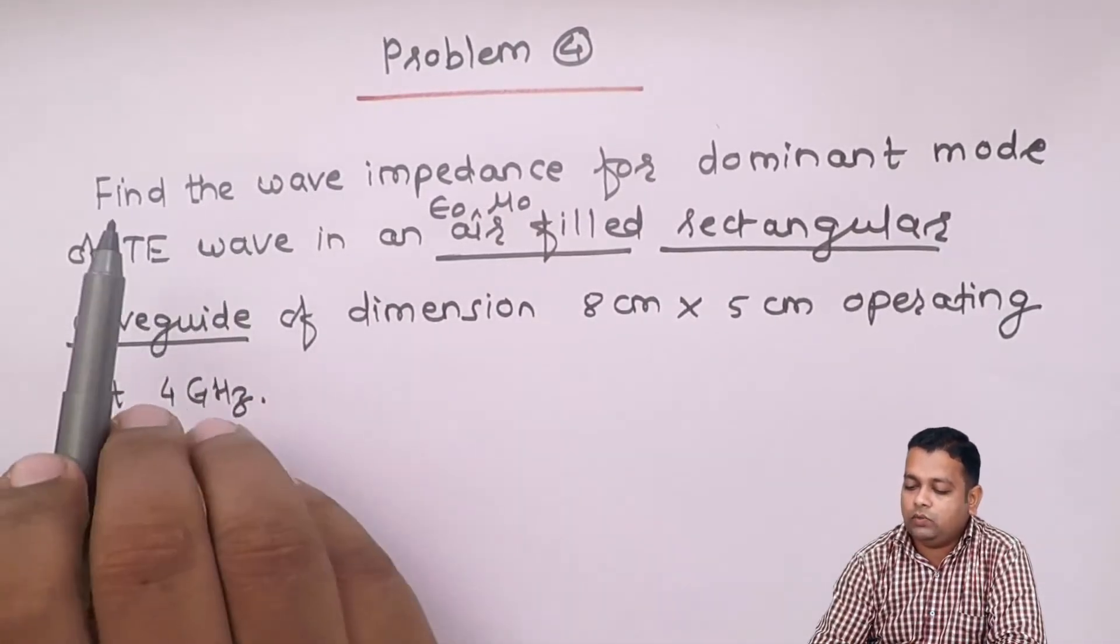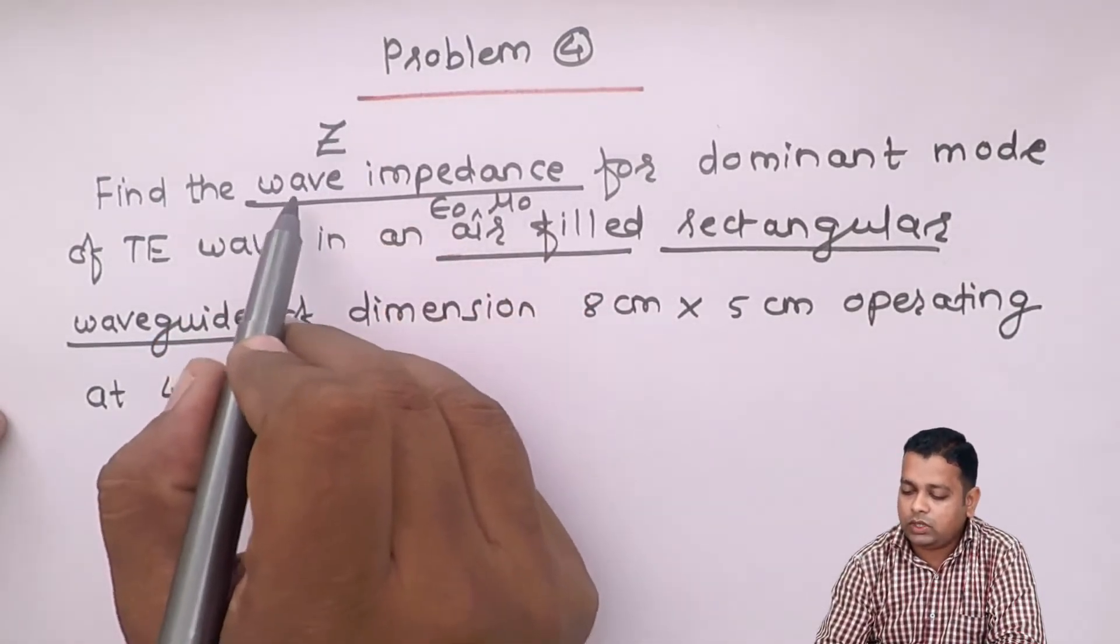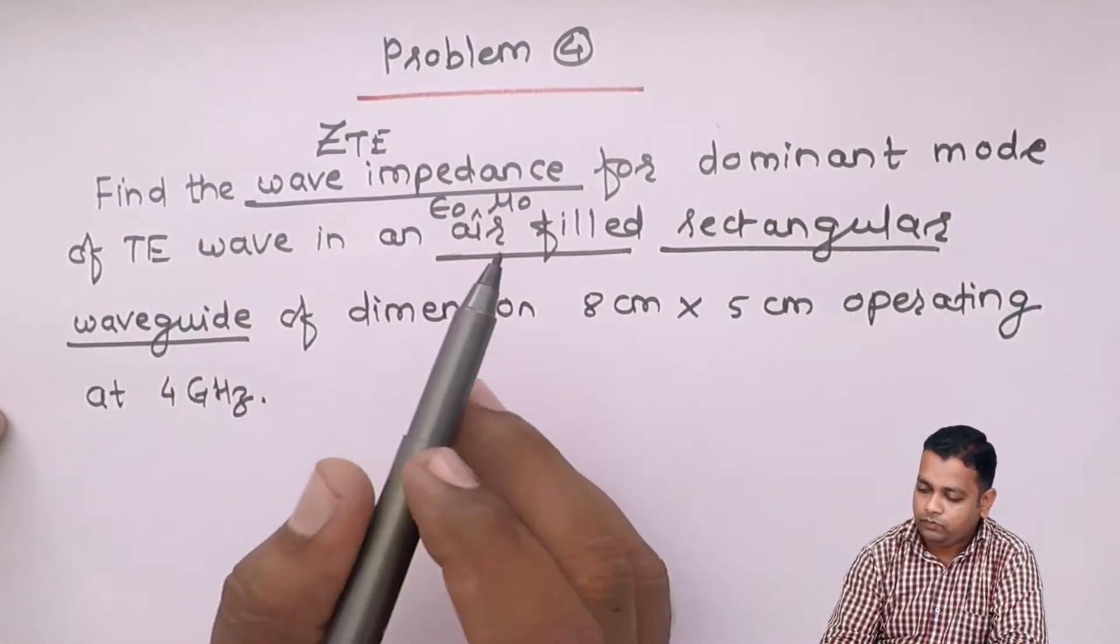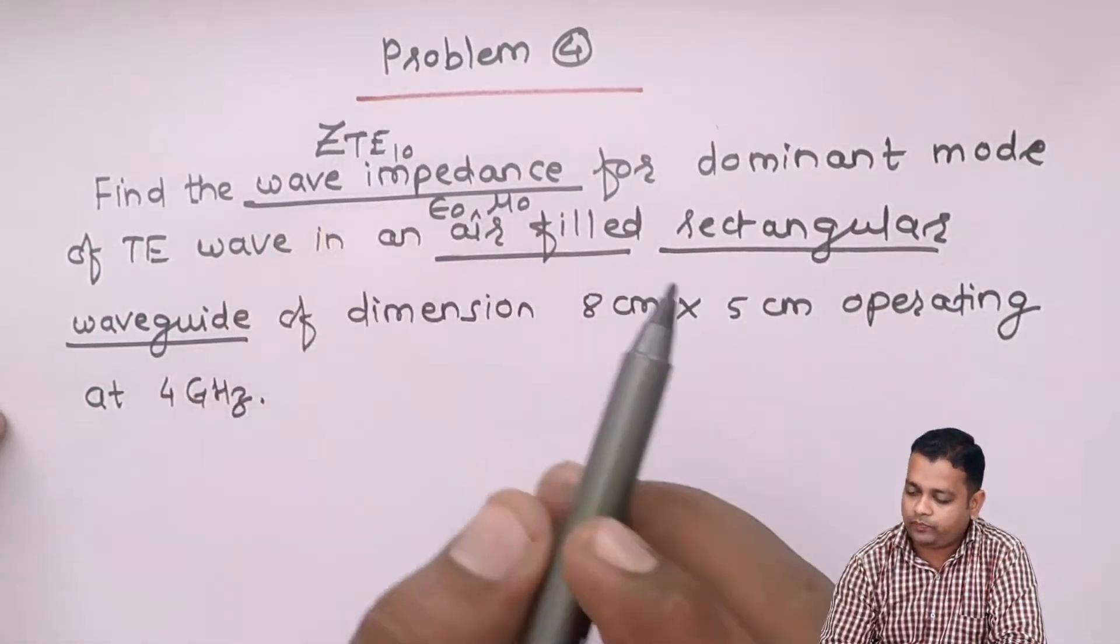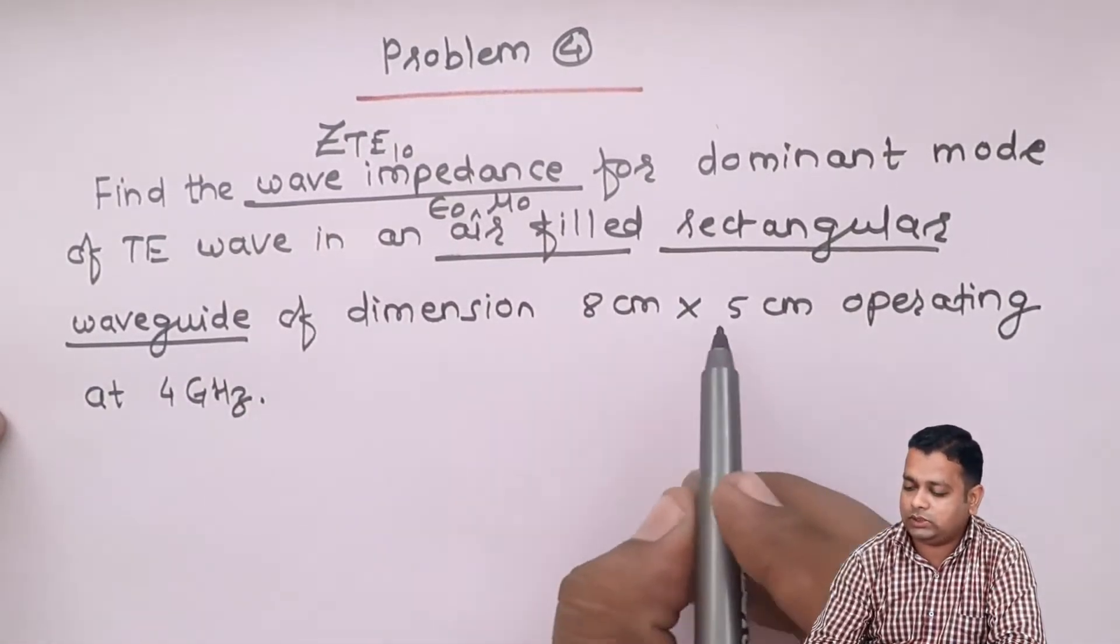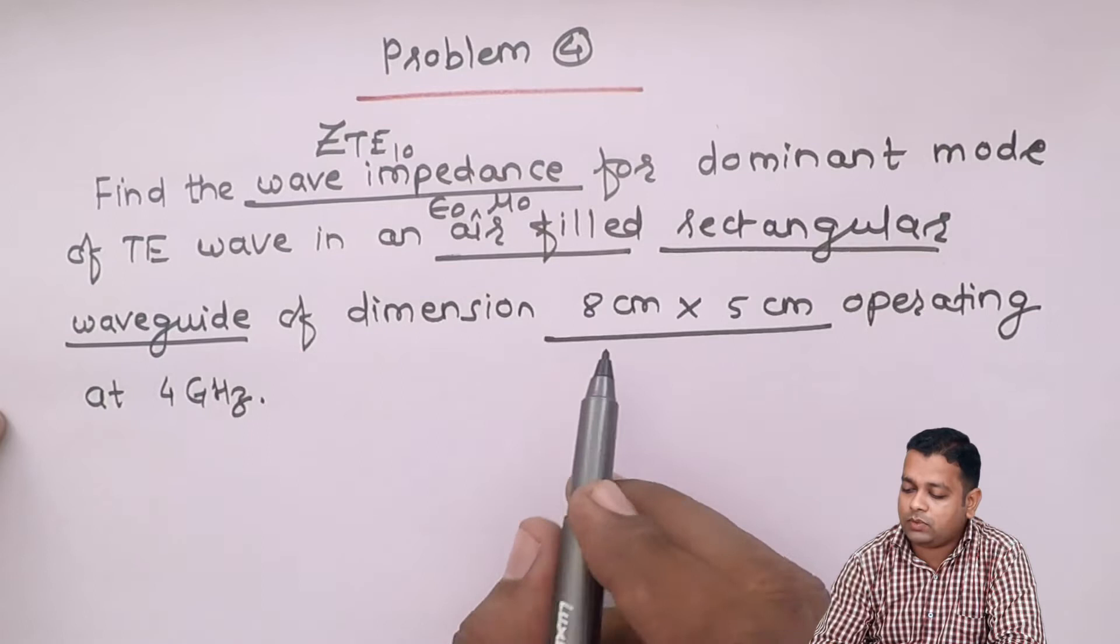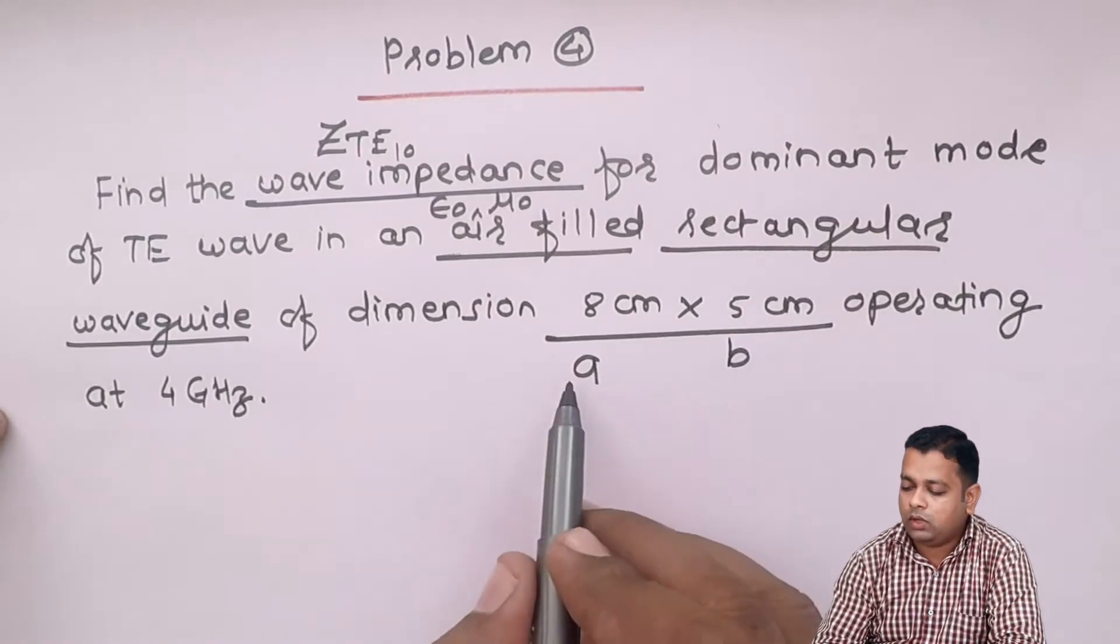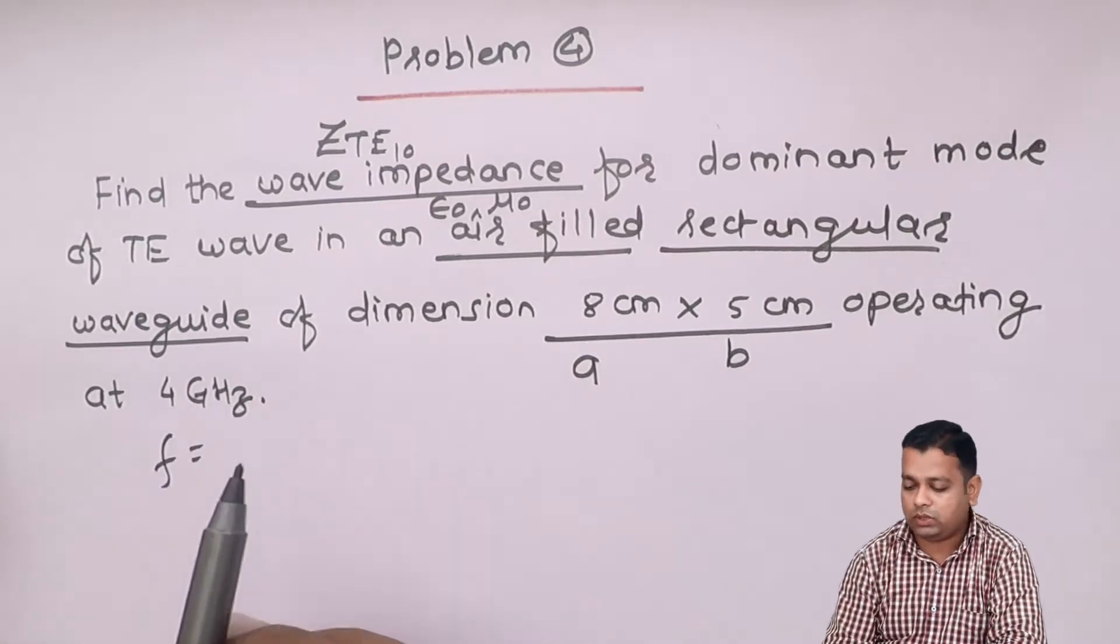What is asked to us? We have to find the wave impedance, denoted by Z. So we have to find wave impedance for TE wave, ZTE. The mode is dominant mode, hence ZTE10 has to be determined. What is the given data? The dimensions are 8 centimeter by 5 centimeter. 8 centimeter is the larger dimension, so A equals 8 centimeter and B the smaller dimension equals 5 centimeter. The operating frequency is 4 gigahertz.